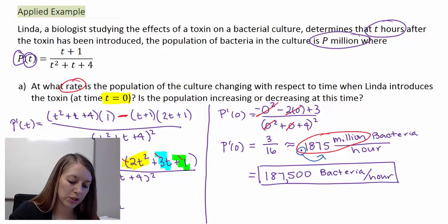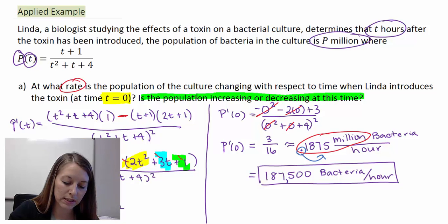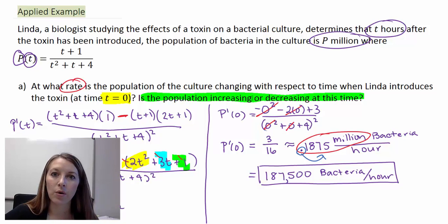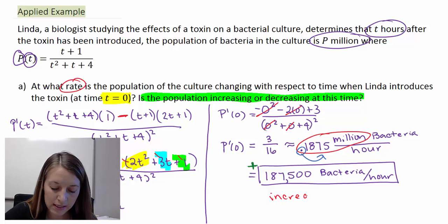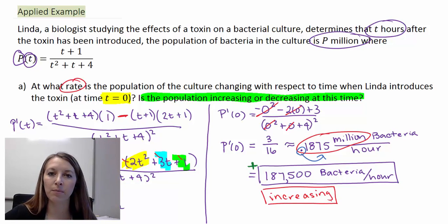The second question then asks, is the population increasing or decreasing at that time? So is it growing or is it declining? That all depends upon what the sign of our answer just was. And we came up with a positive answer here. So since that is positive, that means that our bacteria population is increasing at this time. It's getting larger. And so that is the answer that we have in Part A.